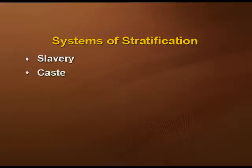Now let's talk about the systems of stratification in the world. There are four basic systems: slavery, caste, estate, and class. Slavery is almost eradicated, but we still discuss it because certain discriminations persist and in one way or another it still exists in some societies.